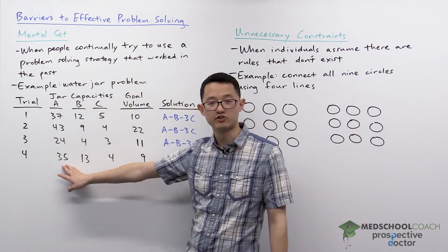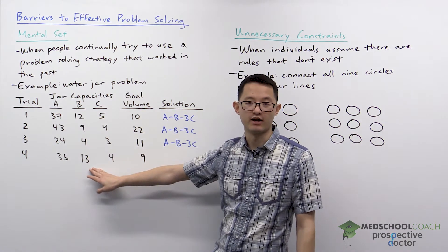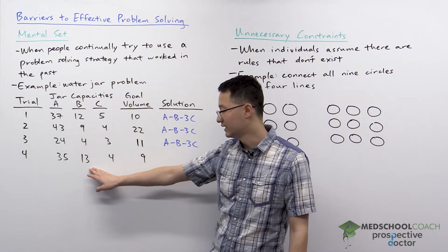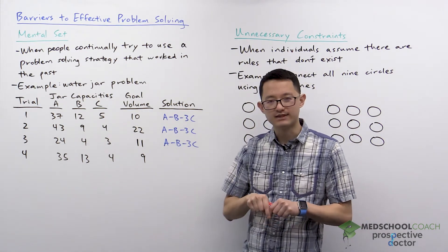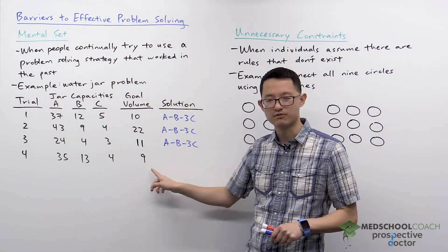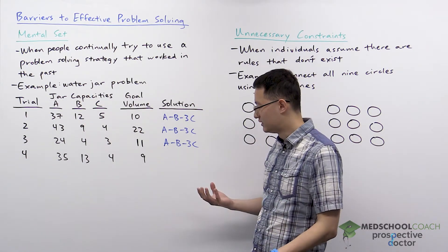That's because they keep trying to use the same approach. Let me fill jar A. I have 35 cups of water. If I pour into jar B, I'll have 22 cups of water. And then if I pour that into jar C three times, that will leave me with 10 cups of water, which isn't what I'm looking for. And then they get stuck. What am I supposed to do?